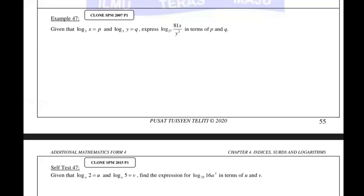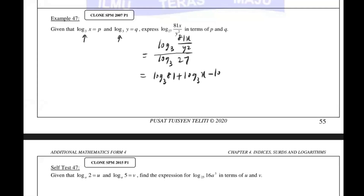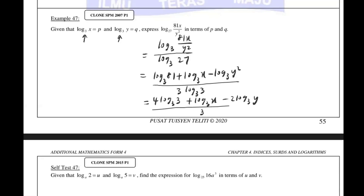Here we have log base 3 expressions. We break this up, but first we need to change to base 3. We have 81x over y squared, and there is a 27 here. Breaking it up: log base 3 of 81 plus log base 3 of x, then divide becomes minus. 27 is 3 to the power 3. 81 is 3 to the power 4. Log base 3 of x is p and log base 3 of y is q, giving 4 plus p minus 2q over 3.